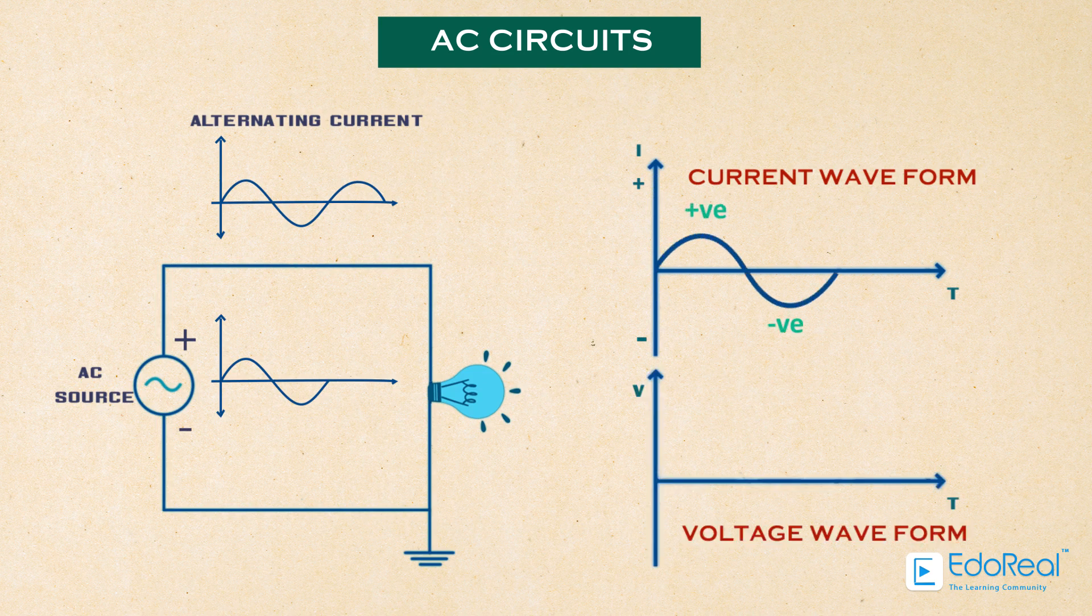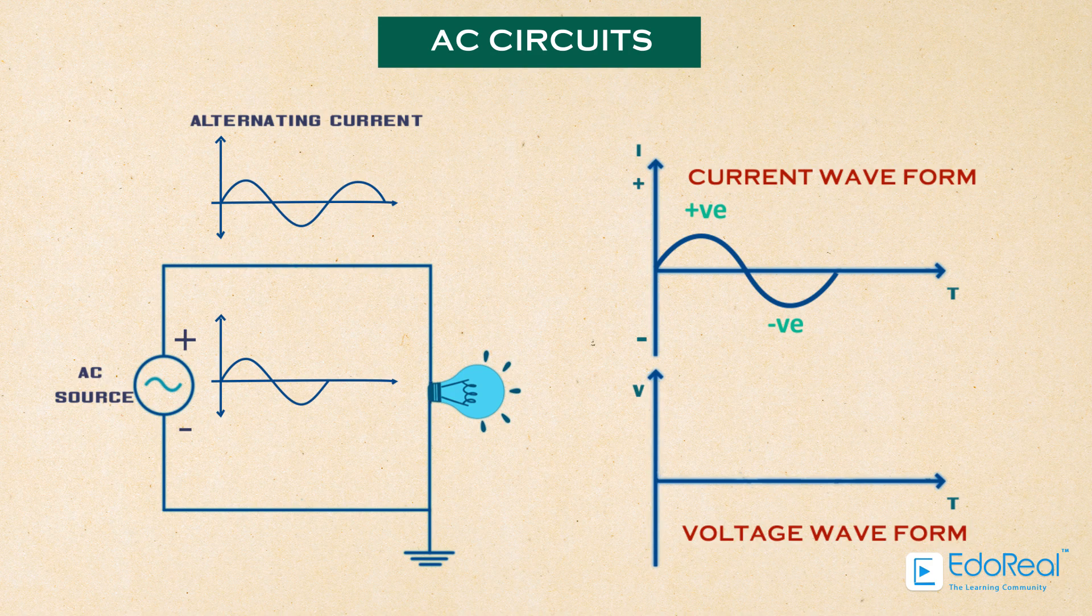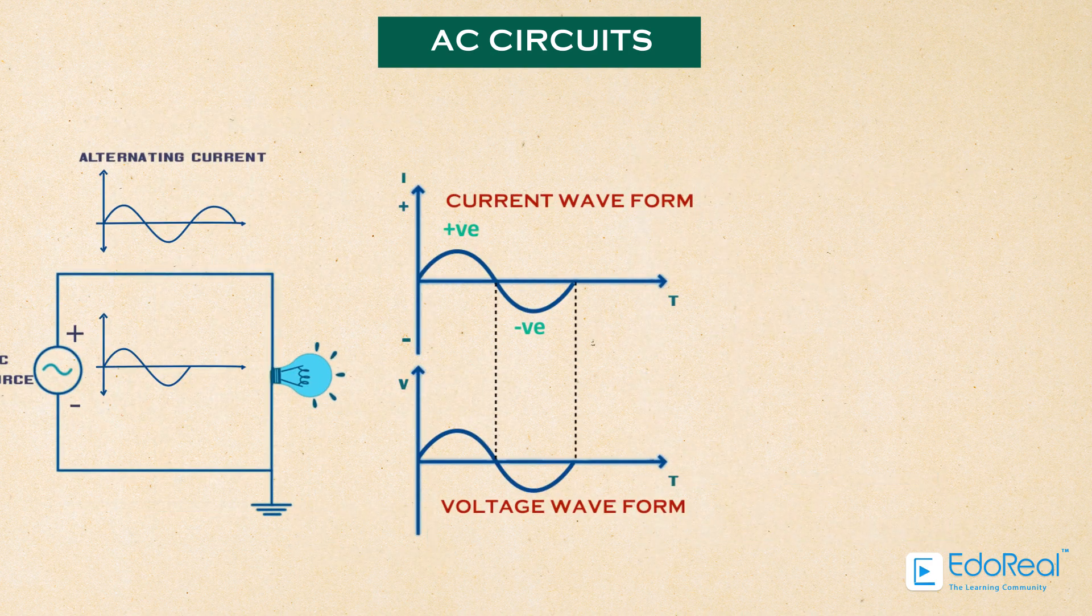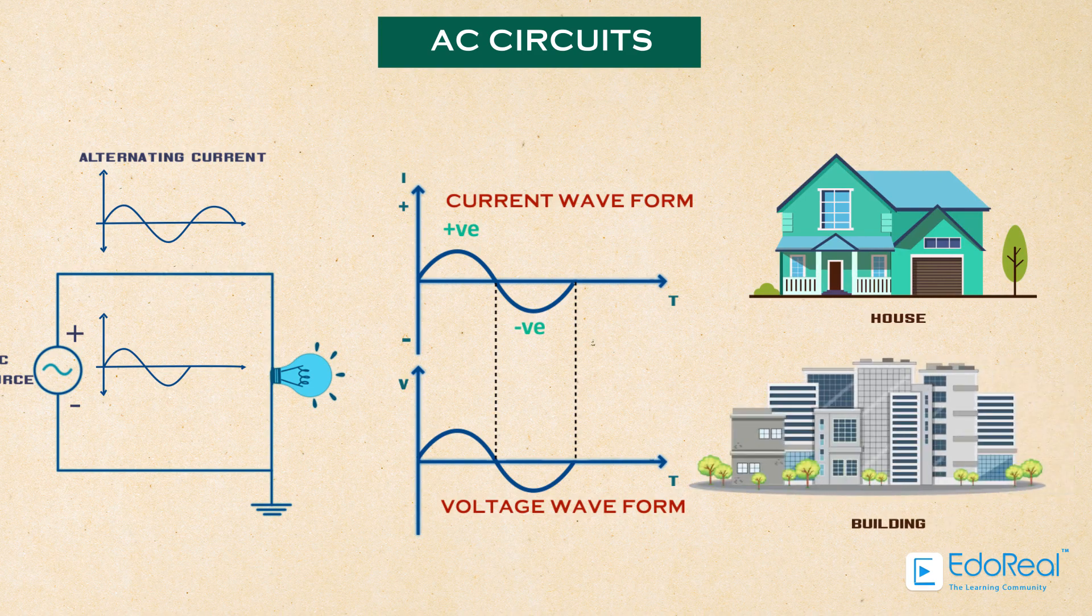As a result, when the current changes its direction from positive to negative, the voltage level also reverses its direction. The AC current is used to deliver power to houses, office buildings, etc.